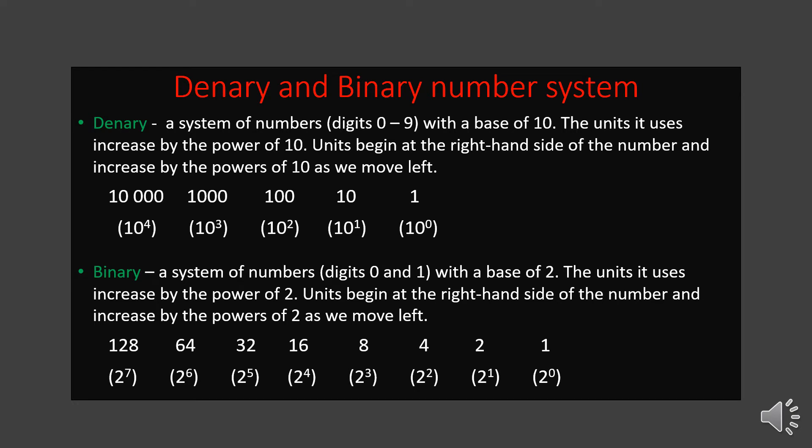Binary is a number system with only two digits, 0 and 1, so it is a base 2 number system. The units increase by powers of 2: 2 to the power 0 is 1, 2 to the power 1 is 2, giving 1, 2, 4, 8, 16, 32, 64, 128, 512, and so on. Both decimal and binary are written from the right hand side, with powers starting from 0. The decimal system increments in multiples of 10; binary in multiples of 2.